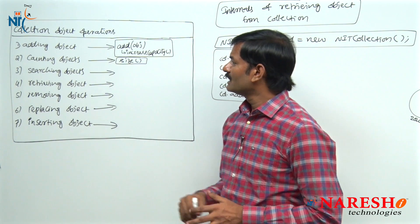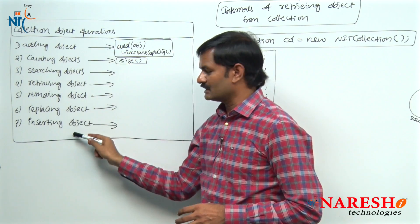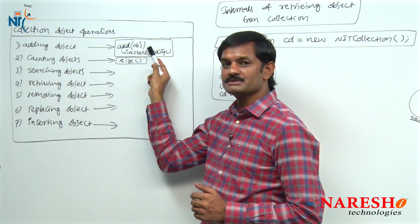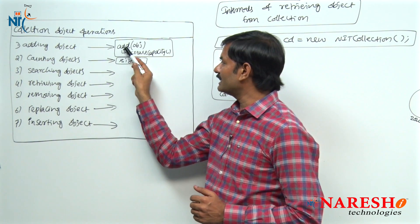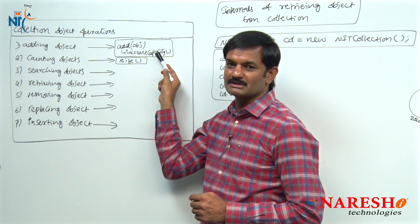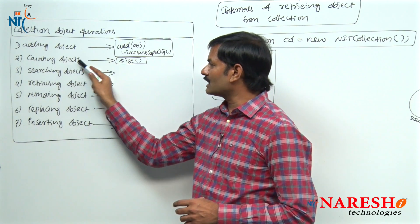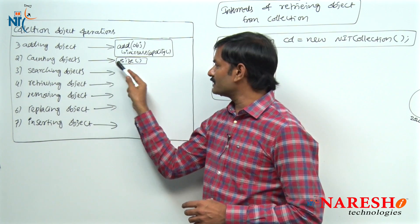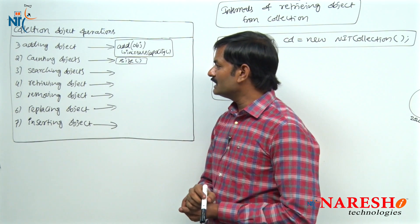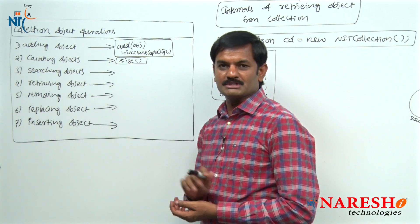That retrieving object from the collection operation is what we are trying to learn now. Totally, collection object operations are seven. We have completed two operations: adding object, and the internals of adding object where we developed increasing capacity to solve the size problem. Next, we developed counting objects, for which the size method was developed. Now in this session, I would like to learn retrieving object.